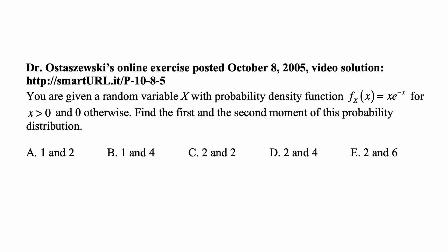Here's the problem for today for exam P on probability. You are given a random variable X with probability density function f_X(x) equal to x times e to the minus x for x greater than 0, and 0 otherwise. Find the first and second moment of this probability distribution.